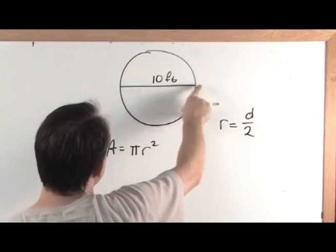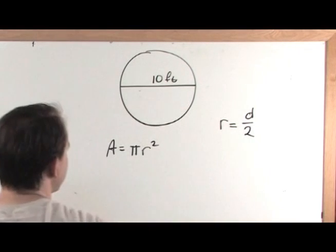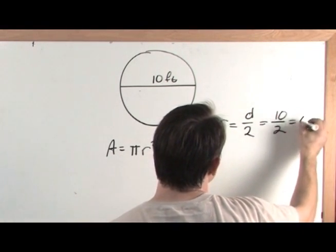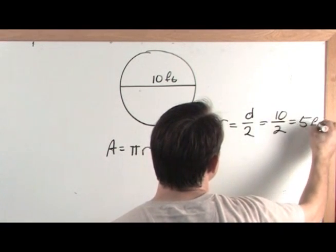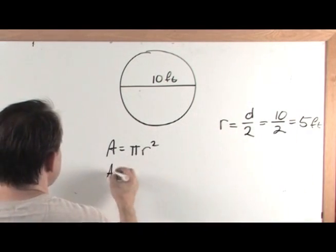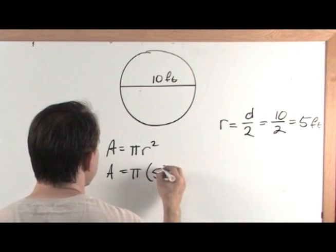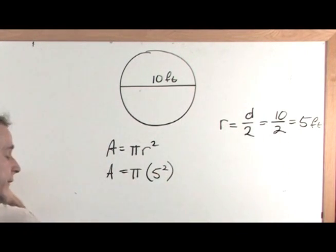The diameter goes the whole way. So if you take the diameter and you divide it by 2, you're going to get the radius. So the radius is 10 divided by 2, which is 5 feet. So then using that number down in here, the area is pi times 5 squared. Putting the 5 in here, 5 squared.